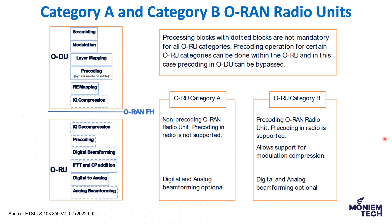However, the more complex the ORU, the larger, heavier, and more power-hungry it will be if you shift functions to the ORU. So there are two choices: shift functions to ODU or shift functions to ORU. Interfacing at a higher level tends to reduce the interface throughput relative to lower layers, but makes the ORU more complex. To solve this issue, the ORAN Alliance has selected the single split option 7.2x, but allows some variation with the pre-coding function.